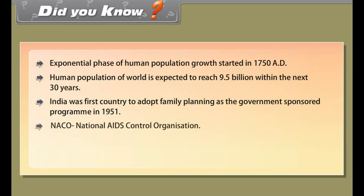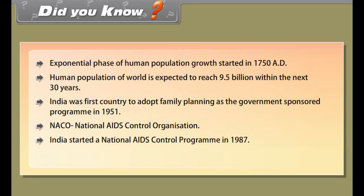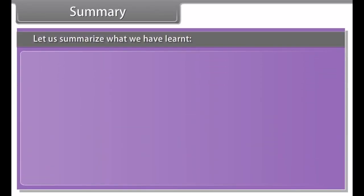Organisms increase their population with the help of reproduction. The rate of birth and death in a given population determines its size. The increase in population occurs when the birth rate is higher than the death rate.